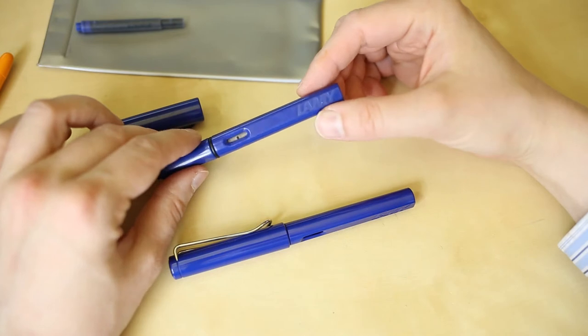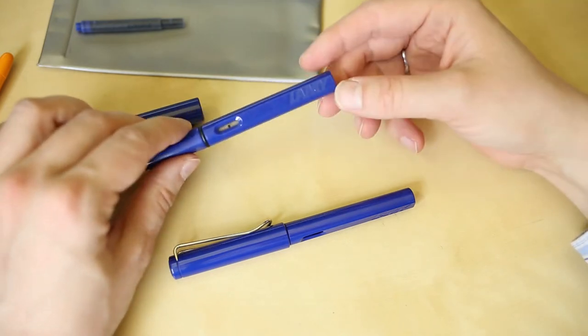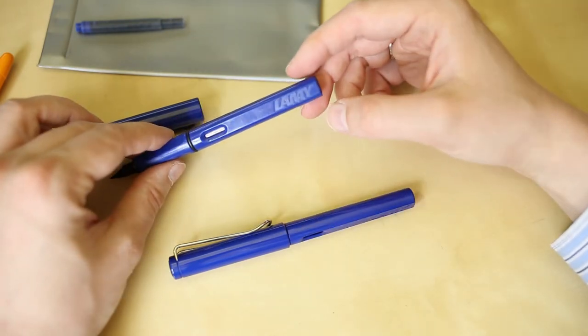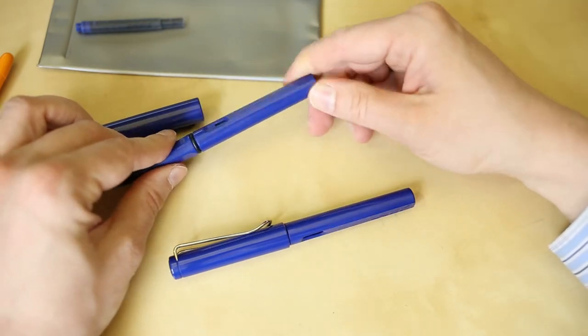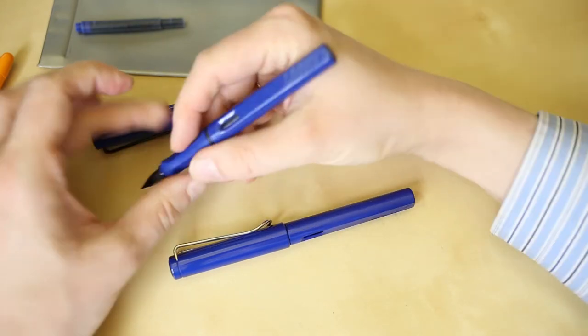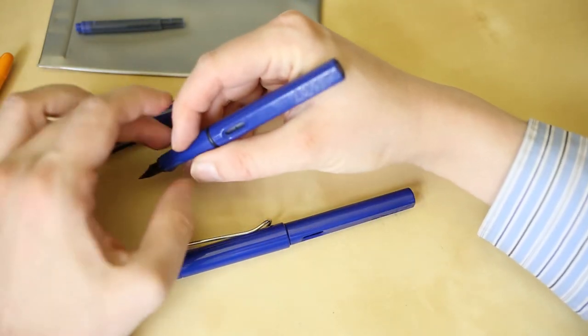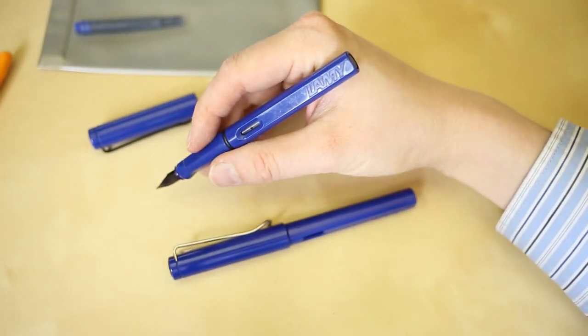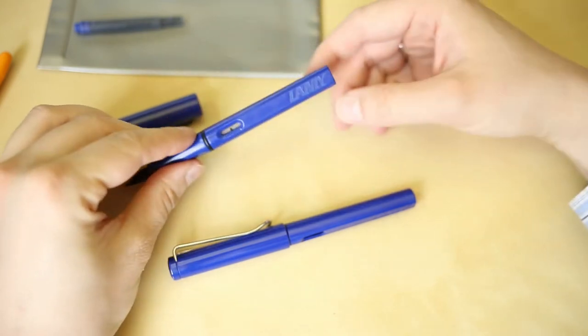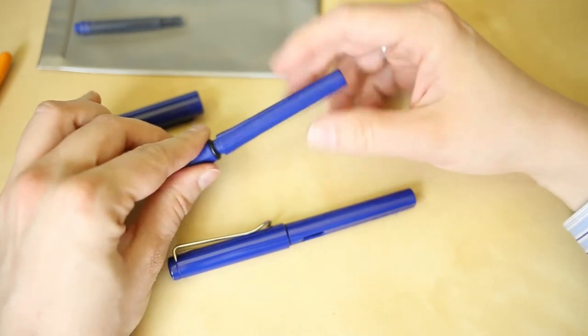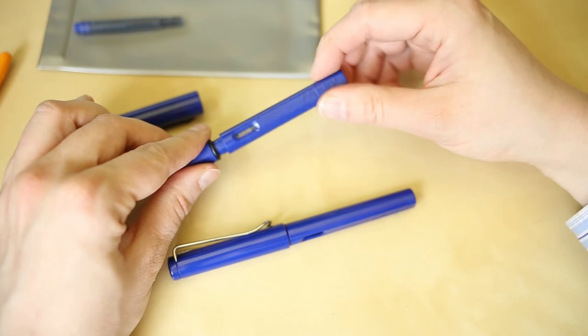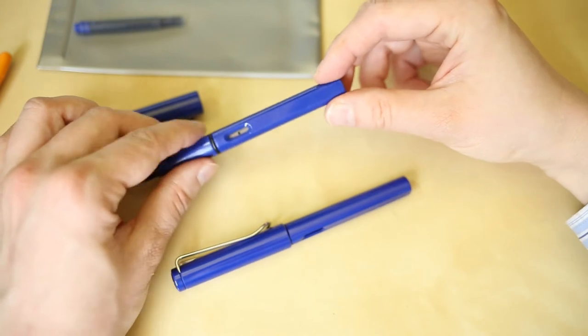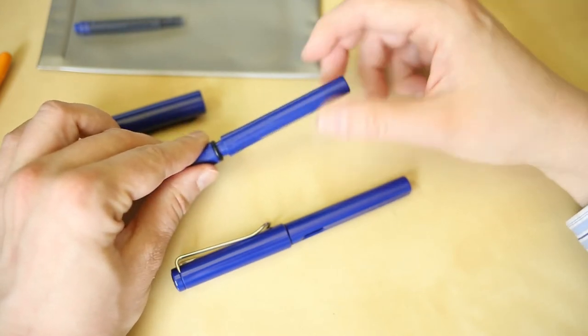One thing I guess when you're bored in school you'll figure out is there are two ways of screwing the body onto the front. One is with the Lamy logo at the top, that's how I usually like it. And the other way is with the Lamy logo at the bottom, but I usually always make sure the Lamy logo is at the front.